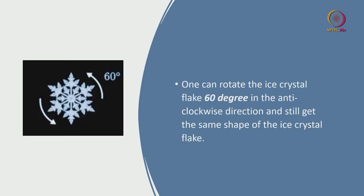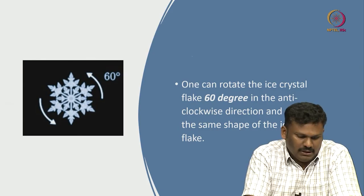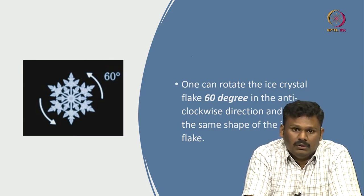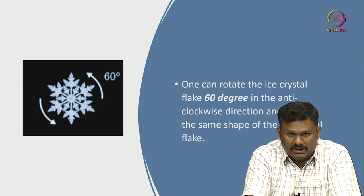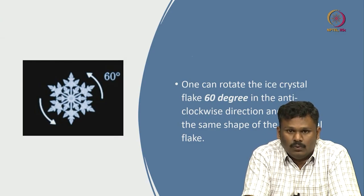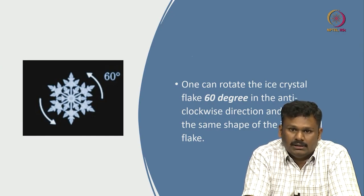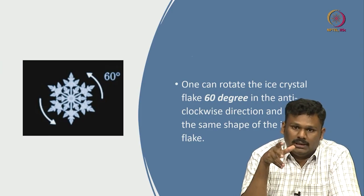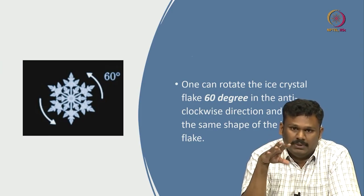One possible move, for example, is to rotate 60 degrees in the anticlockwise direction and still get the same shape of the ice crystal flake. Similarly, we can also rotate clockwise 60 degrees — again the shape does not change. If you rotate 120 degrees, it does not matter whether you do it clockwise or anticlockwise, again the shape does not change.